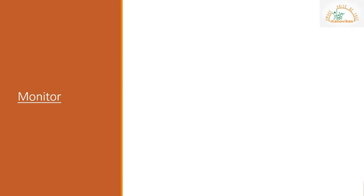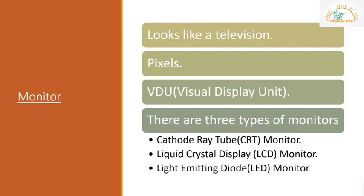The most commonly used output device is the monitor. Right now you can see this video on your monitor. In our day-to-day life we cannot do without a monitor. It is used to display text, images, videos, etc. The monitor is also called a visual display unit. The picture on a monitor is made up of thousands of tiny colored dots called pixels or picture elements. The quality and detail of the picture depends on the number of pixels the monitor can display — the higher the number of pixels, the better the quality.